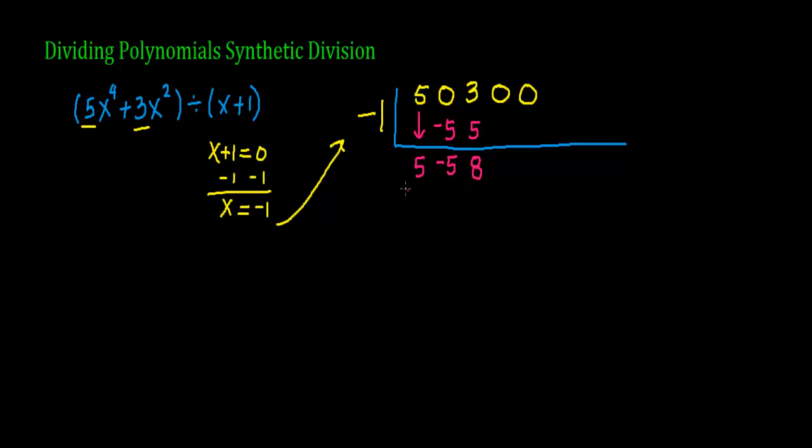Take 8 and multiply it times negative 1, and you get negative 8. 0 plus negative 8 is negative 8. Take negative 8, and multiply it times negative 1, and you get a positive 8. And now you add 0 plus 8, and you get 8.